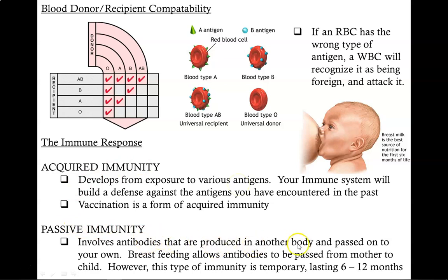With passive immunity, antibodies that are produced in another body are passed on to your own. For instance, newborn babies typically do not have acquired immunity — they are usually protected by the uterus and have not been exposed to any disease-causing agents yet. So when they leave the protection of the uterus, they can be more susceptible to disease. However, breast milk contains antibodies that are passed on from mother to child, and this grants the baby temporary immunity to many of the diseases the mother acquired over her life, usually for 6 to 12 months. This is one of the advantages of being breastfed rather than formula-fed, as baby formula does not contain any antibodies, but breast milk does.